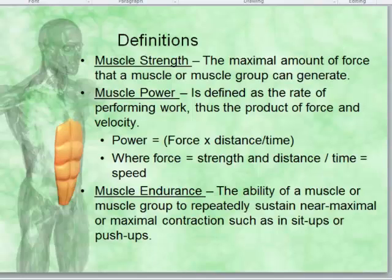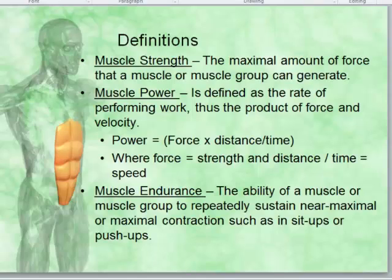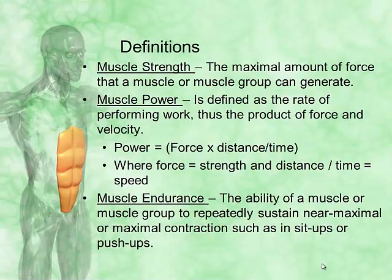Power is defined as the rate of performing work — the product of force and velocity. So power equals force times distance divided by time, which is the velocity factor. Muscle endurance is the ability of a muscle or muscle group to repeatedly sustain near-maximal or maximal contractions, such as in sit-ups or push-ups.